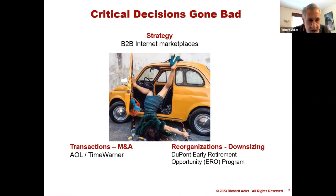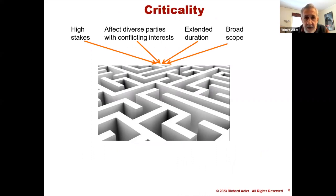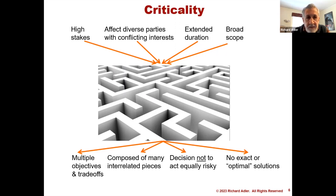So why does this happen and what can be done to fix the problem? What makes a decision critical? I propose four criteria. They entail significant risk — if you screw them up, they'll likely damage, cripple, or kill your business and harm your career. They impact diverse stakeholders including customers, investors, employees, and competitors, about whose agendas we often have limited knowledge. They play out over years or even decades — consider decisions to develop drugs or energy assets. And their impacts extend beyond organizational boundaries into markets or the economy at large.